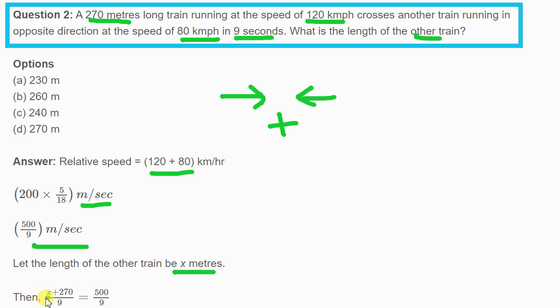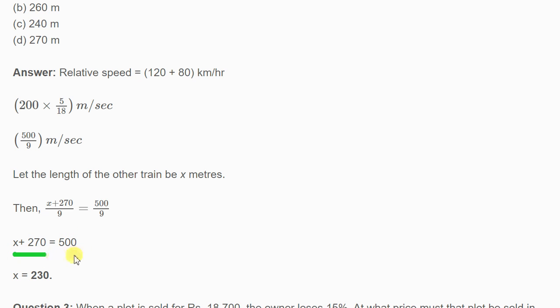Let the length of the other train be x meters. Using the speed formula, distance upon time, we get x plus 270 divided by 9 equals 500/9. From this equation, x plus 270 equals 500, so x equals 230 meters.